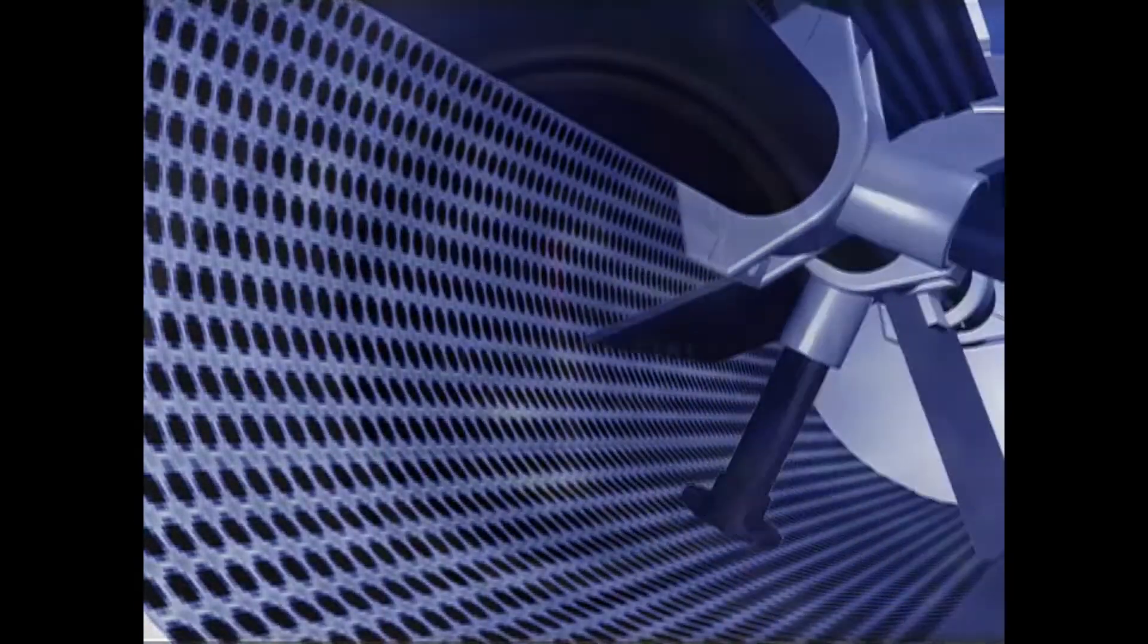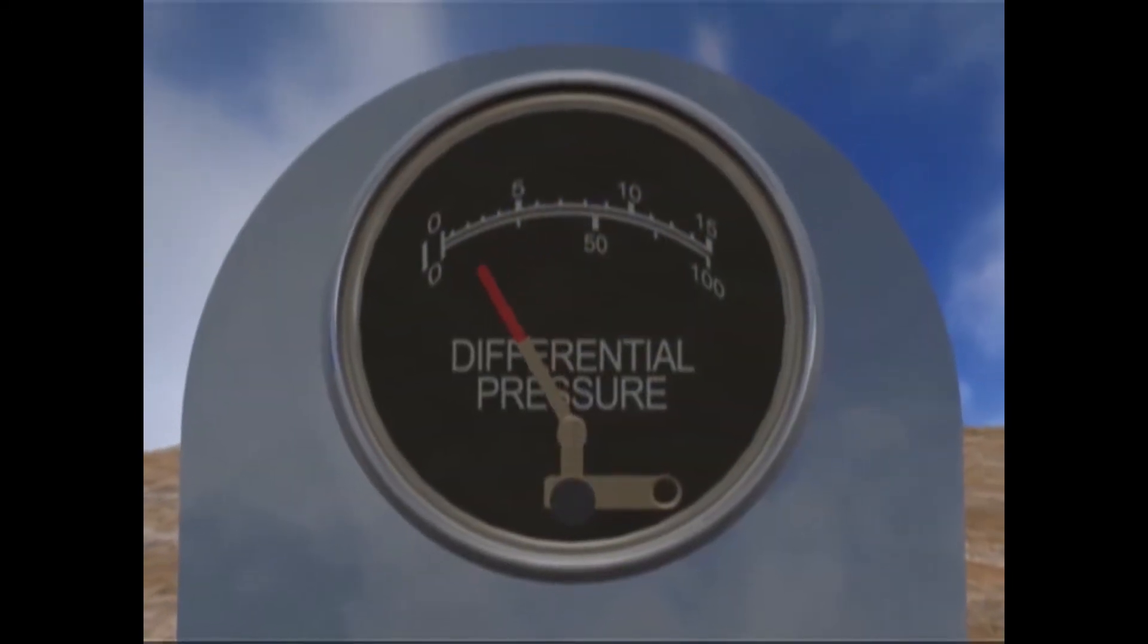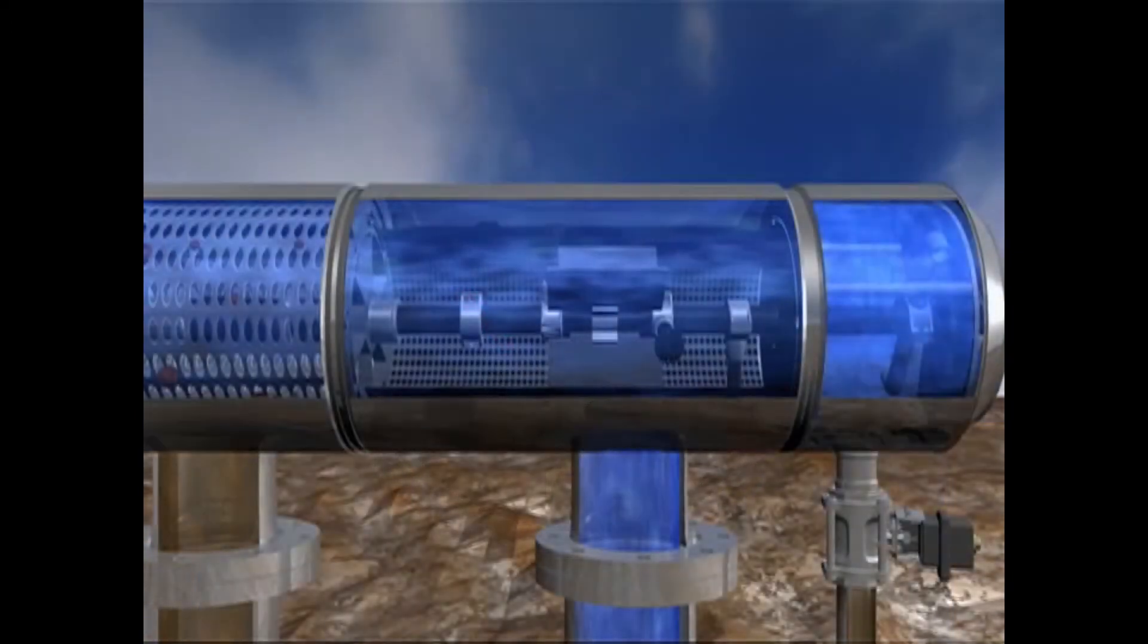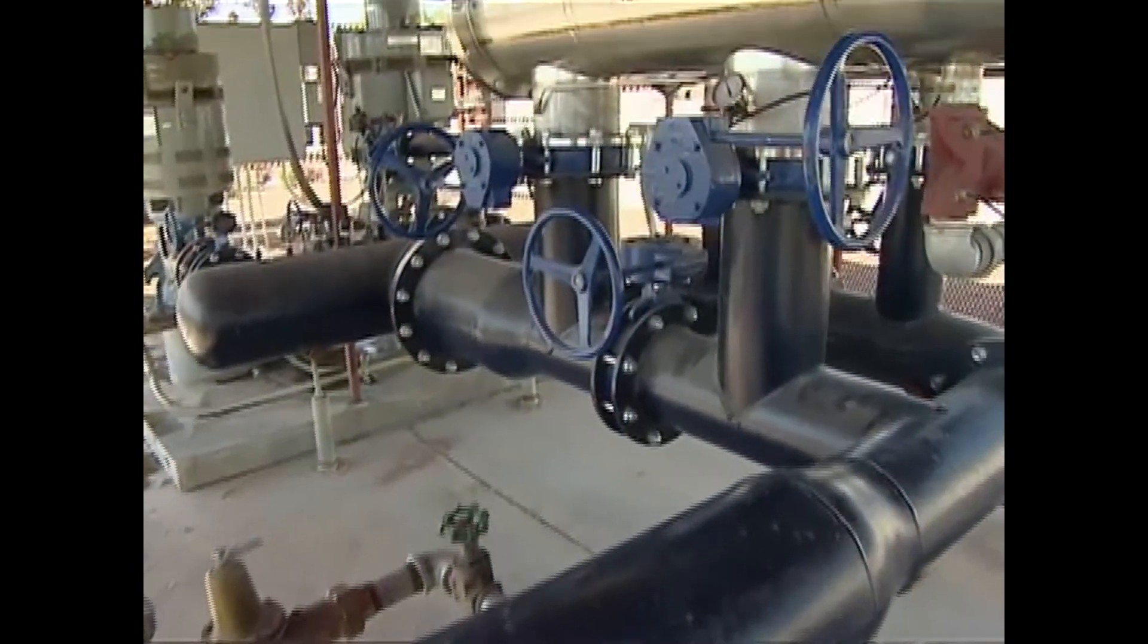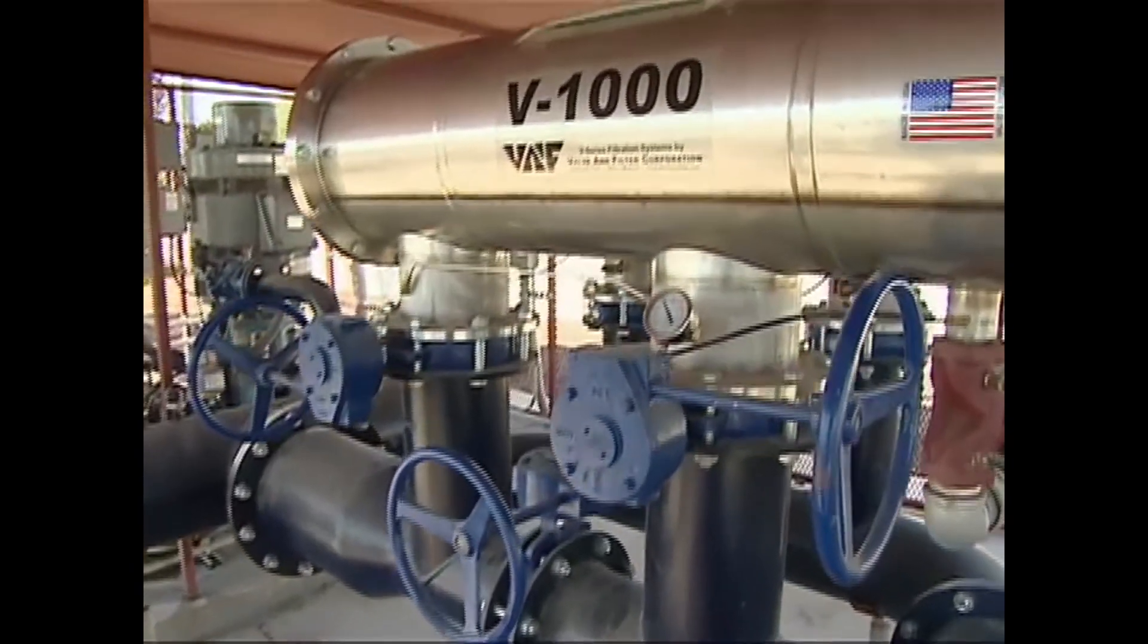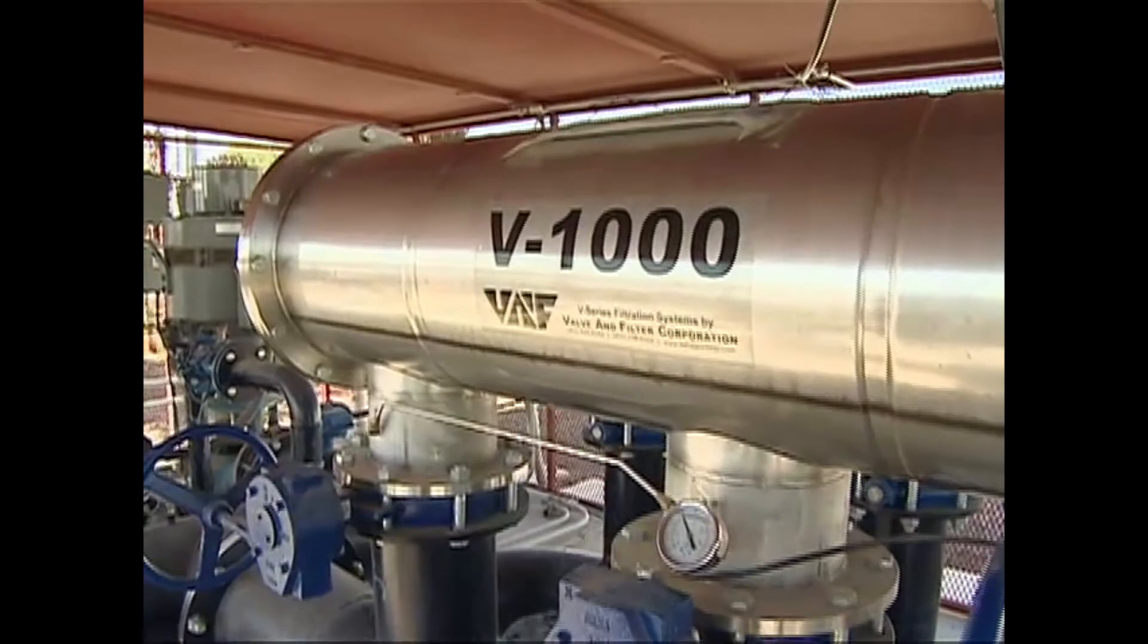At the end of the process, the differential pressure gauge returns to zero, indicating that the screen is clean. The V-series filter continues to provide clean water to your system at a constant pressure throughout this brief cleaning cycle.